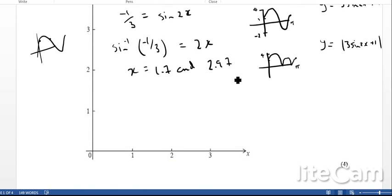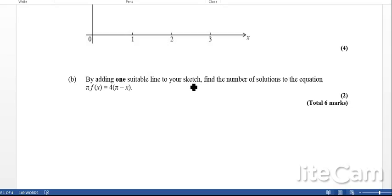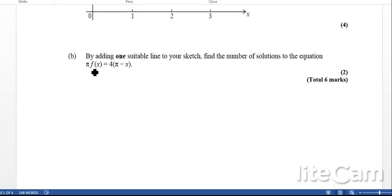And the second part says by adding one suitable line to your sketch, find the number of solutions to the equation πf(x) = 4π - x. Well if I rearrange that, I'm going to get f(x) = (4π - x)/π, so basically if I plot this straight line here, and then I can see how many times it intersects with the graph that I've got.